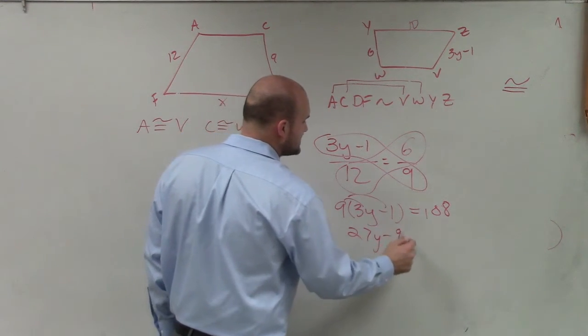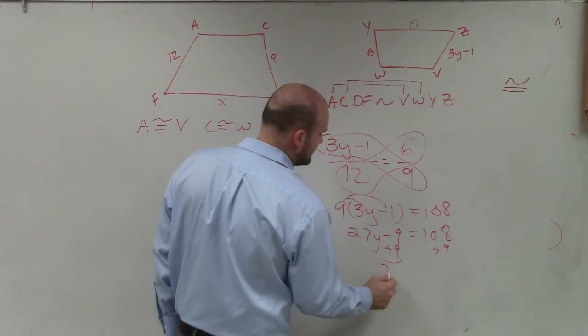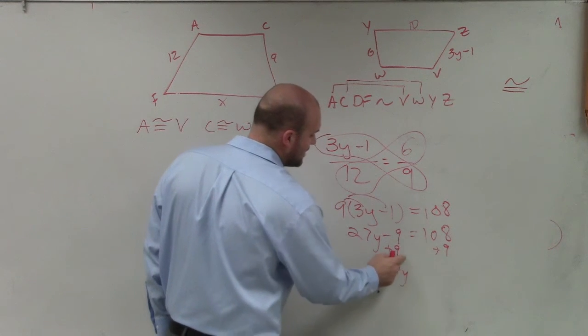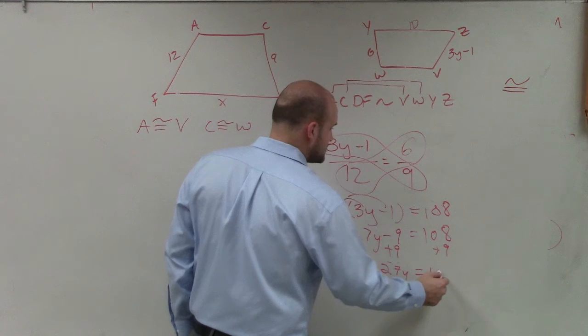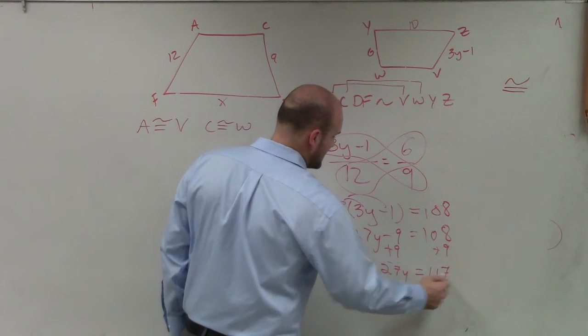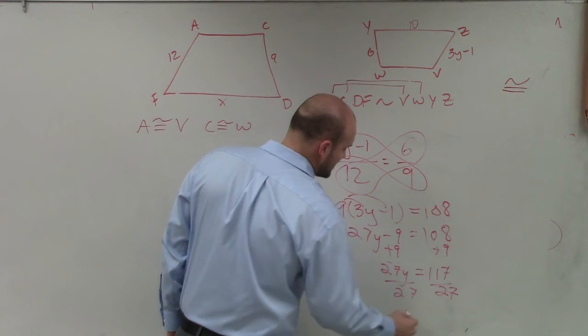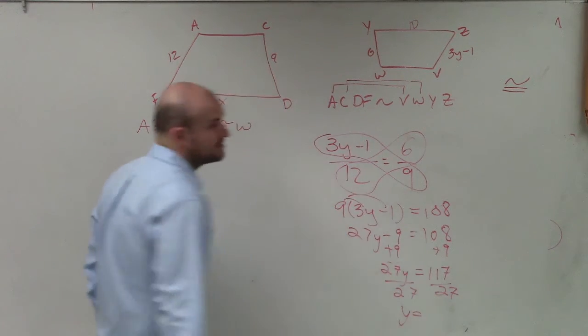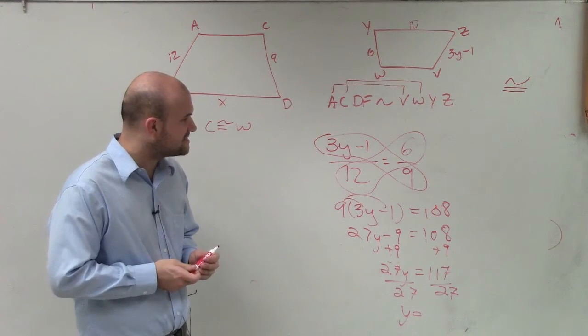27y minus 9 equals 108. Add 9, add 9. 27y equals 117, divide by 27, divide by 27. y equals, yes? How are you doing your name? I don't know.